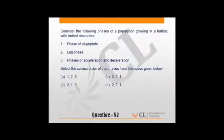Consider the following phases of population growth in habitat with limited resources. Going further, the phases are: first lag phase, then phase of acceleration and deceleration, then phase of asymptote. When we say habitat with limited resources, they initially show what is called a sigmoid curve. They initially lag, then show phase of acceleration, and then phase of asymptote that goes on perpetually. So it's 2-3-1.